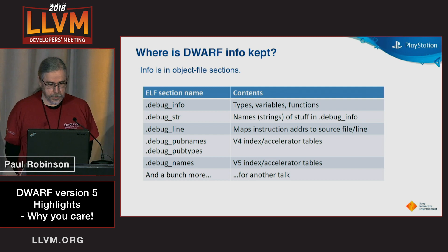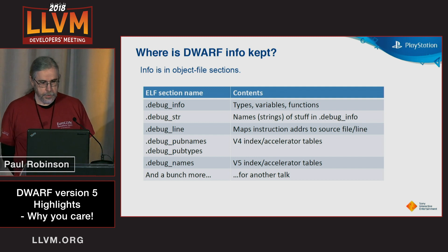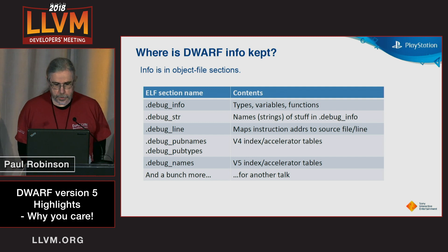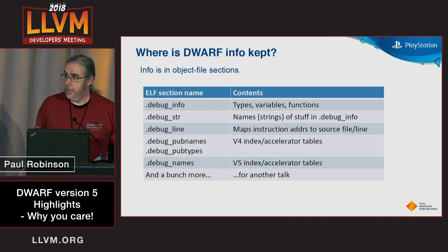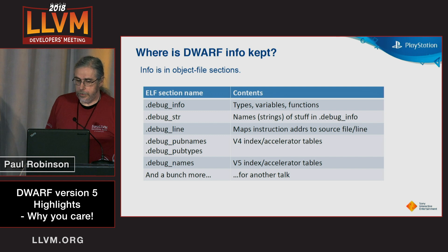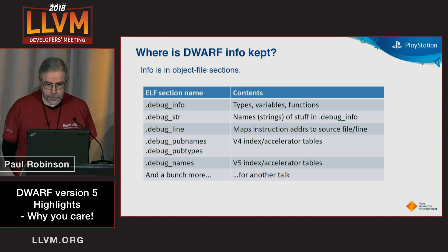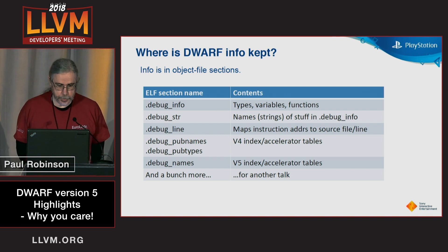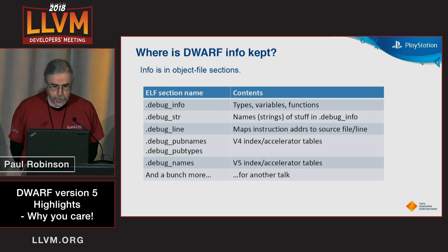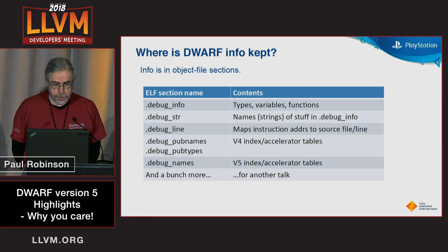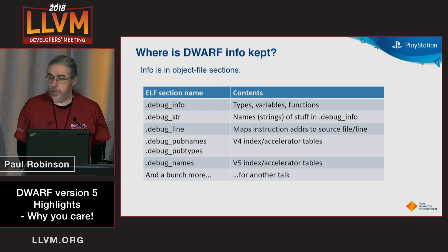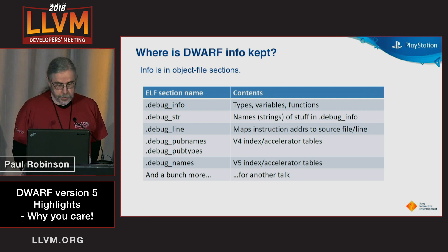They all start with .debug. You have your main debug info, which points to names of things which are kept in a string section — debug_str — line tables, and debug_line. We have a couple of name lookup accelerator tables.